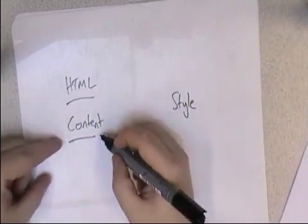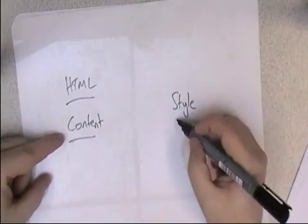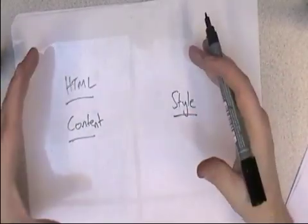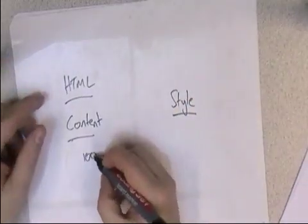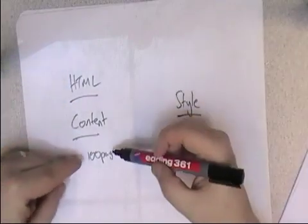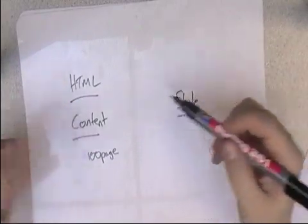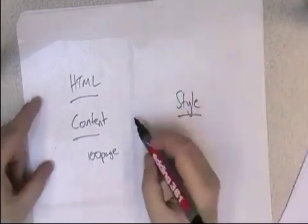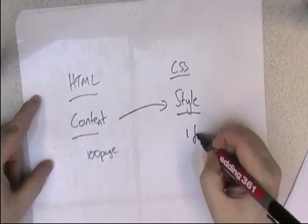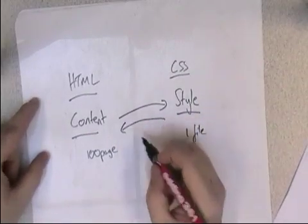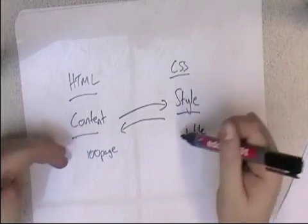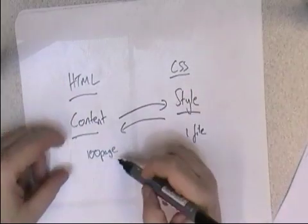So you have one file that tells you all the stuff you want to appear in the web page — all the text, all the images — and in another file you describe how you want it to appear. The beauty of that is you can then change the appearance of your website really easily. If you've got 100 pages and you want to change the background colour from blue to red, you'd have to go to every single HTML page and change the tags.